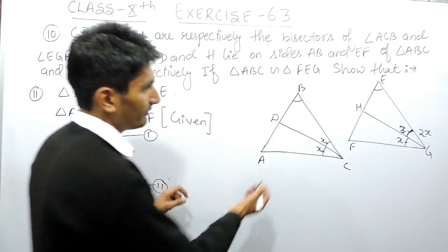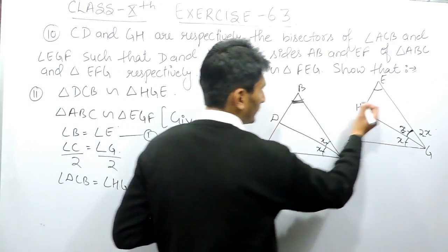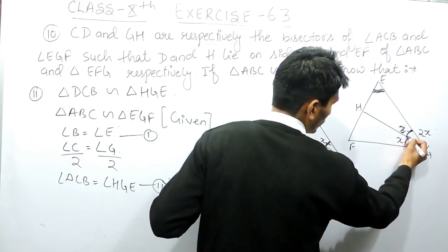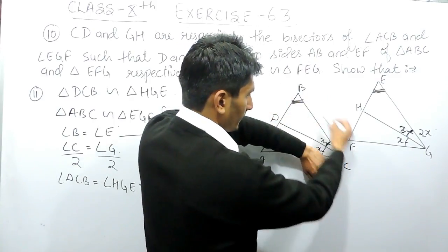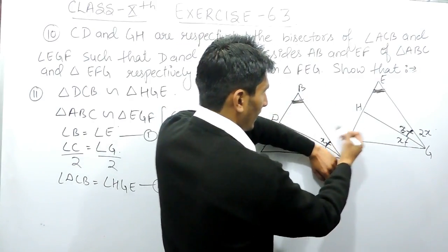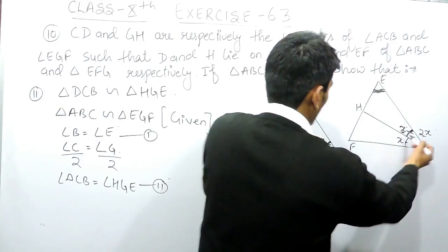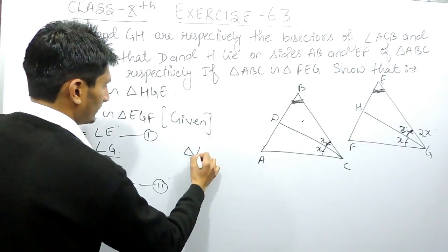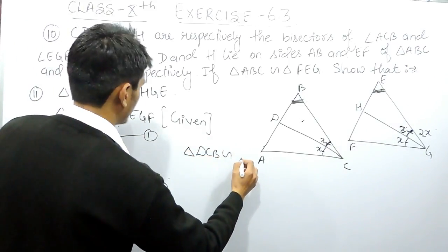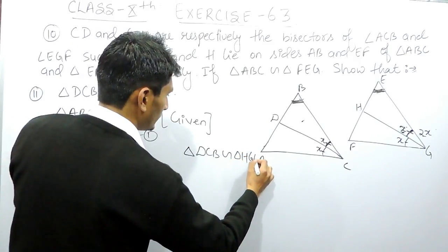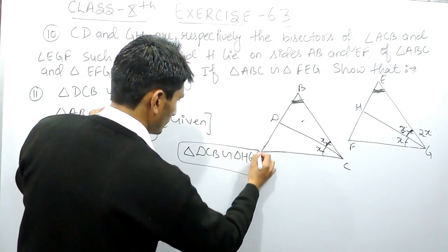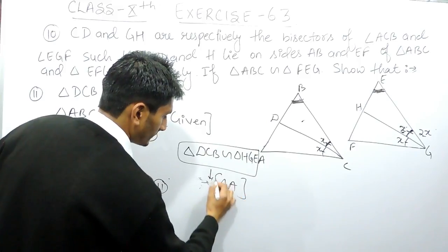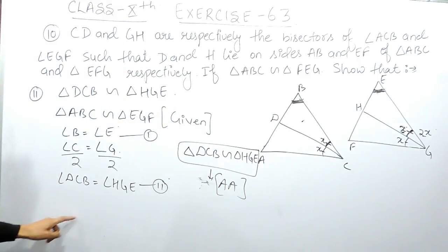We have proved that angle DCB equals angle HGE, and angle B equals angle E. So in triangle DCB we have proved that two angles are equal to two angles of triangle HGE. Therefore, by the Angle-Angle (AA) property of similarity, triangle DCB is similar to triangle HGE. This is confirmed by the AA similarity criterion.